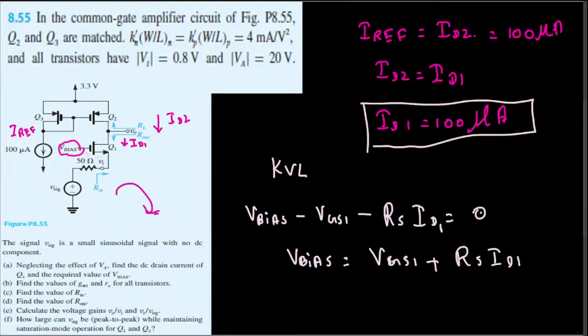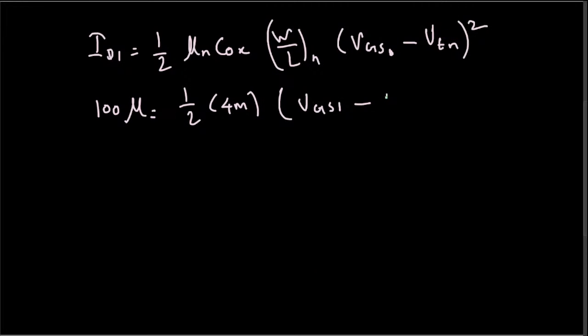V_GS1 is the unknown variable. For the NMOSFET, they are saying all the transistors have 0.8 voltage, so it doesn't matter NMOS or PMOS, all of them have 0.8. So it means that this is going to be 0.8 voltage right here, squared. And here you have to just rearrange and solve for V_GS1. If you solve for it, you will end up getting 1.024 volts.